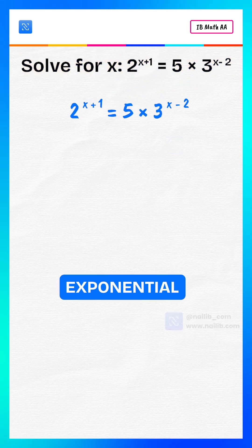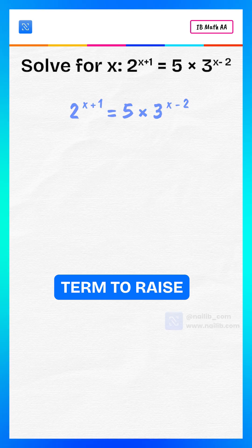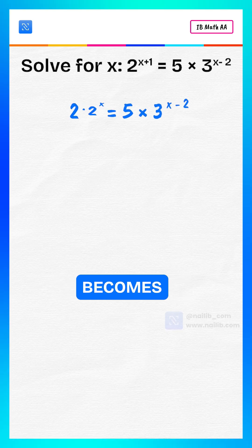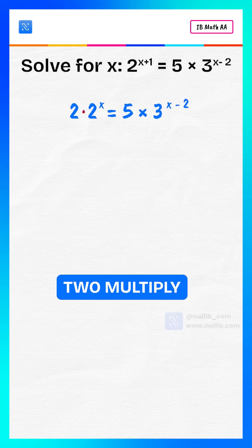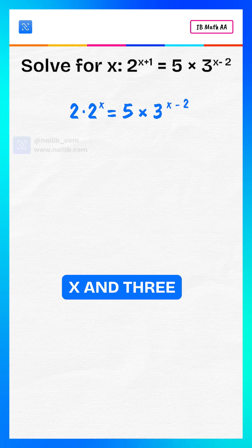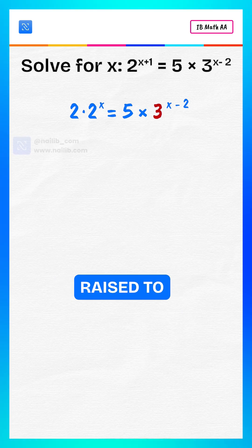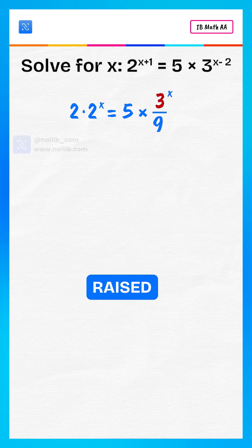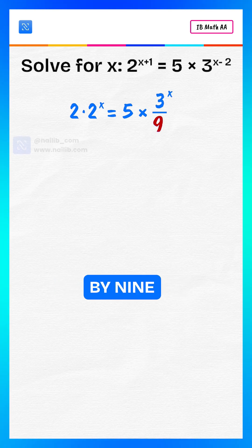Rewrite each exponential term. 2 raised to the power x plus 1 becomes 2 multiplied by 2 raised to the power x. And 3 raised to the power x minus 2 becomes 3 raised to the power x divided by 9.